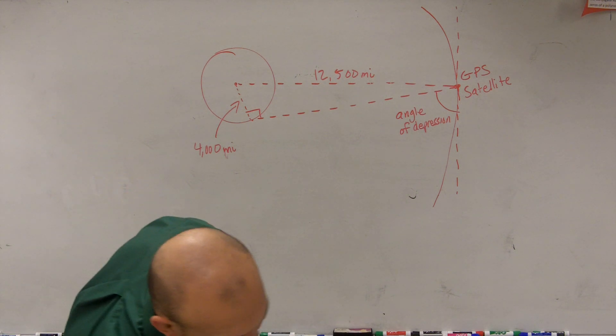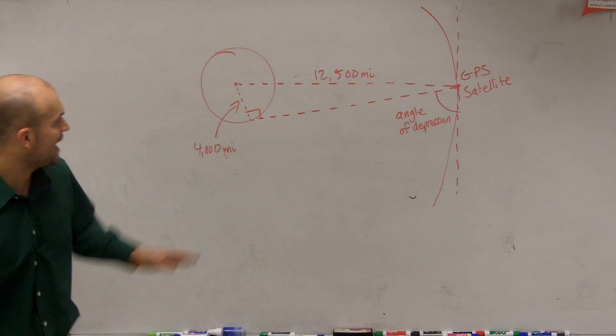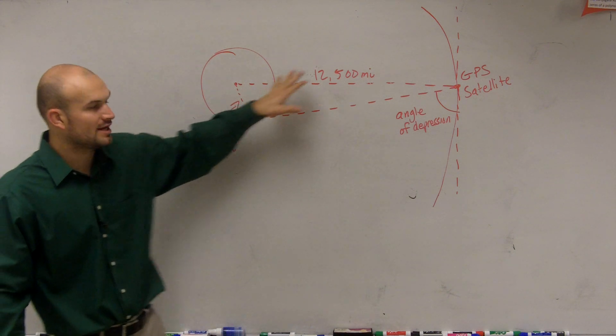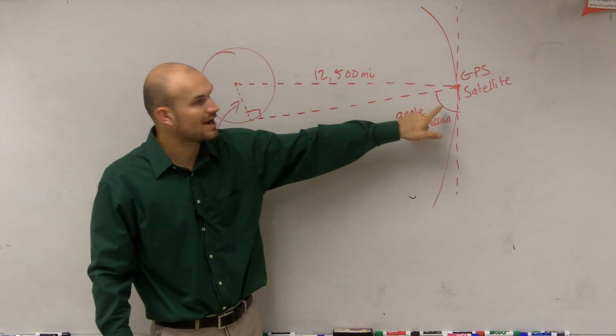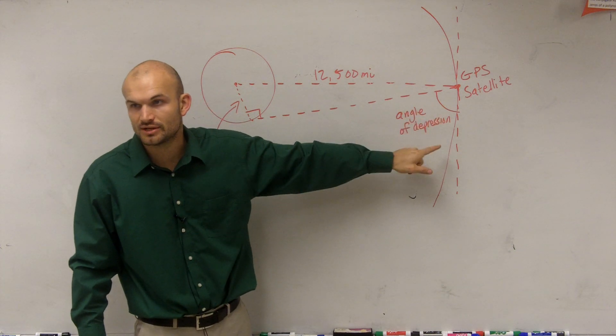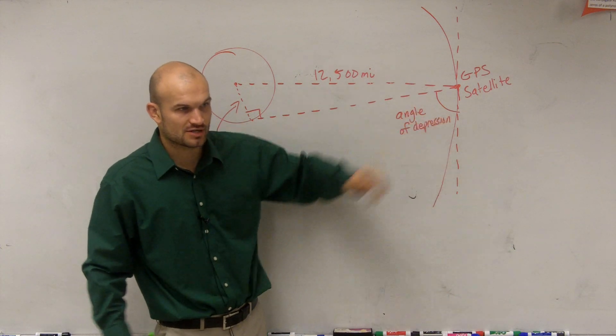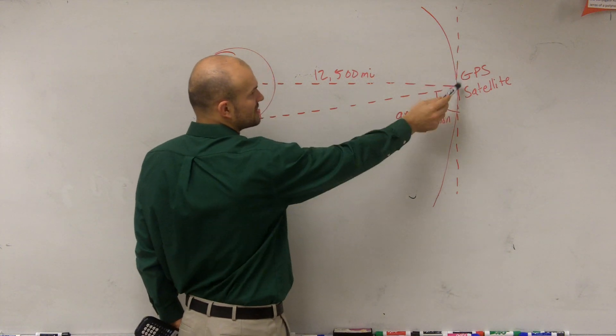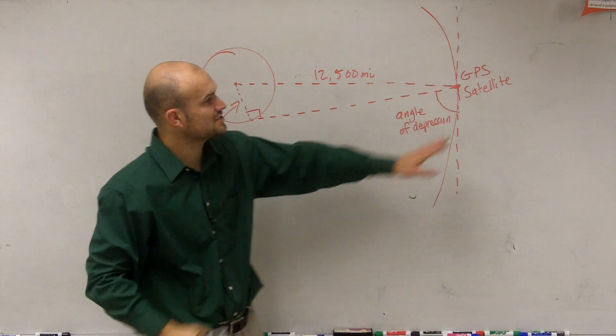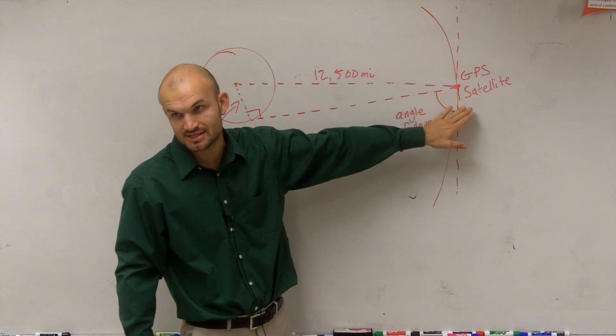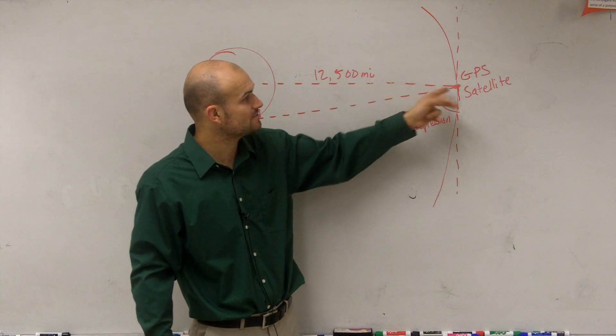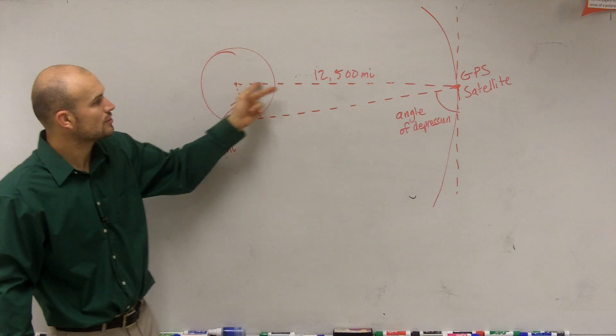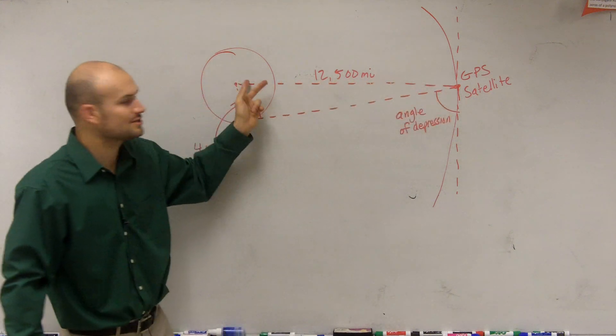So when doing this problem, I have one side of my triangle and my other side of my triangle. However, I need to find this angle of depression. Well, to find this angle of depression, it's helpful to notice that we have here this tangent line to the orbit of my satellite. So my tangent line is going to be perpendicular to this direct line to Mother Earth.